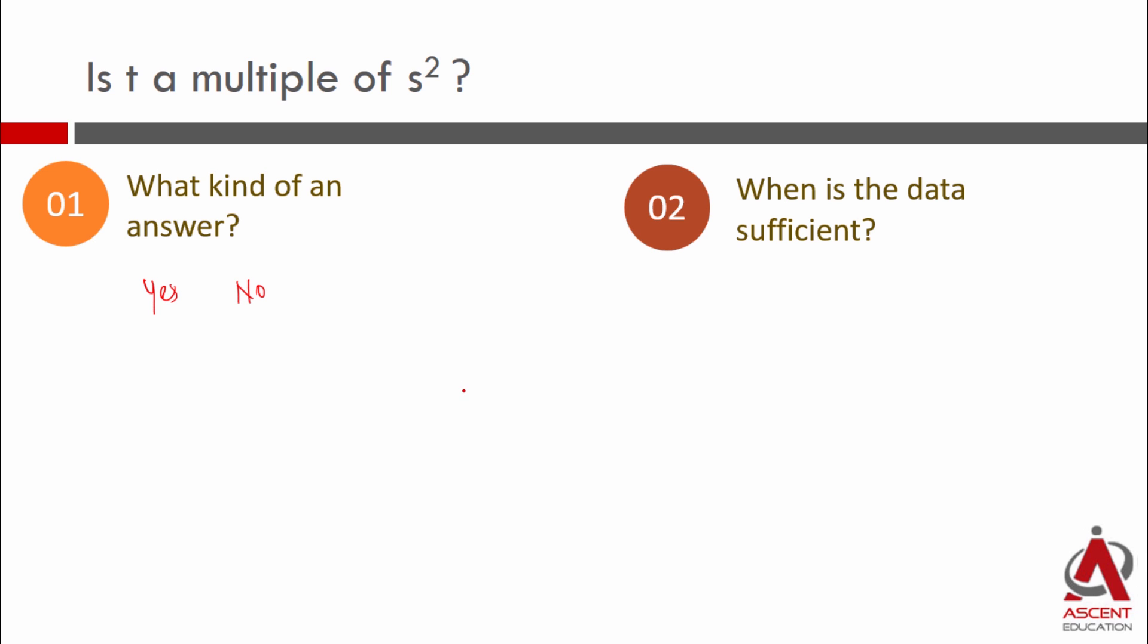If we are able to say t cannot be a multiple of s square, a definite no, then the data is sufficient. So if you are able to come up with a definite answer then the data is sufficient.